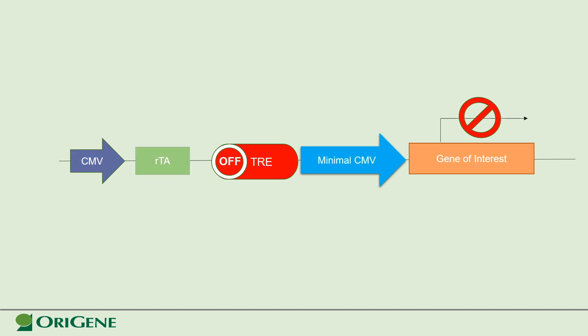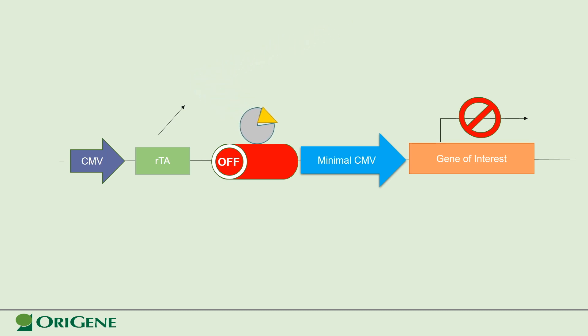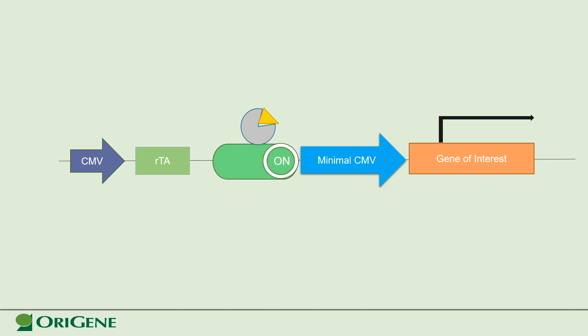A TETON system consists of TRE upstream of a minimal promoter. In the TETON system, when there is no doxycycline present, the RT does not bind to the TRE region and no gene expression is seen. But when doxycycline is present in the environment, the RTA binds to the TRE and switches on the gene expression.